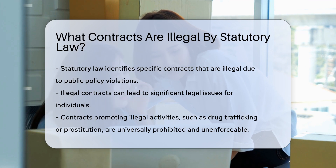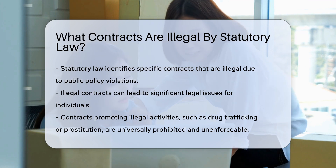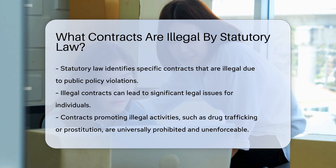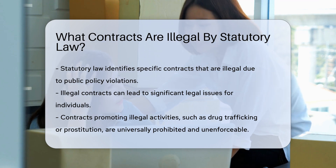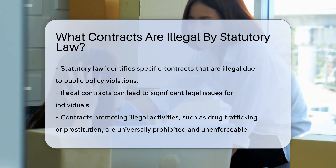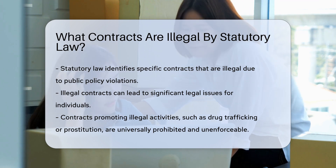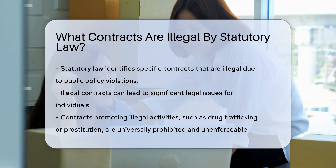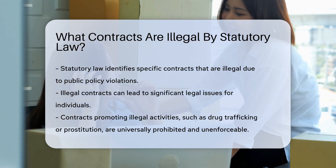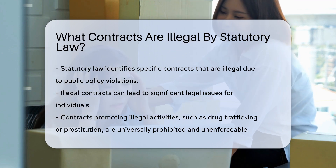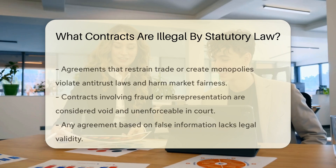One category of illegal contracts involves agreements that promote illegal activities. For instance, contracts for drug trafficking or prostitution are universally prohibited. Such contracts lack enforceability in courts.